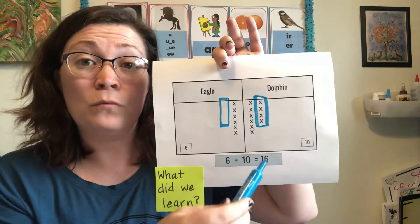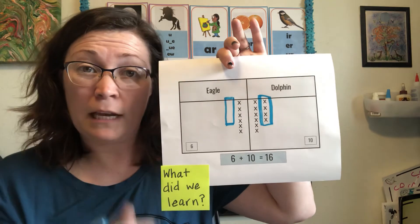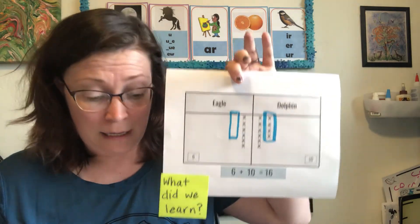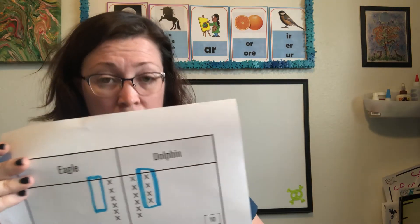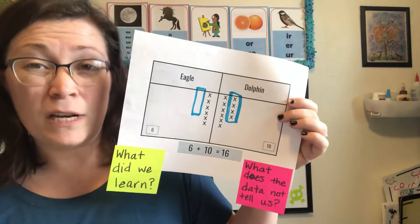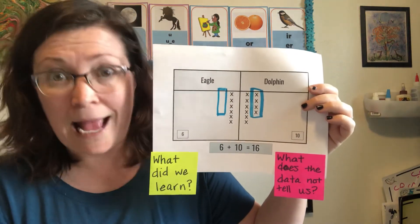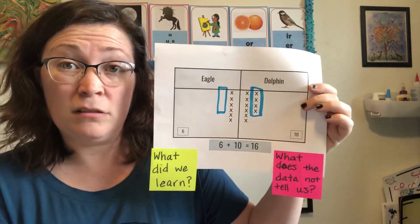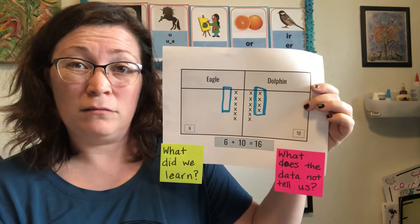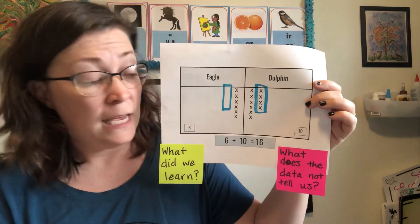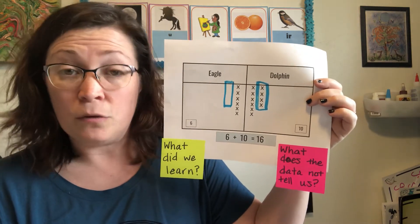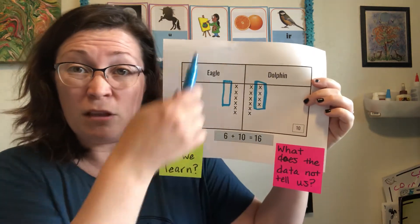That's really important because the more people that answer your question, the better. We had a small number of kids answer the question — maybe we could ask some more. Maybe you could ask your parents which one they would rather be, and then we'll get even more data. So what does the data tell us? It tells us that more people want to swim in the ocean than fly in the sky, that less people wanted to be an eagle than a dolphin, and that only 16 people answered the question. We know our class has 26 people, so not everybody got to answer. That's all the stuff we learned just from this one little chart!